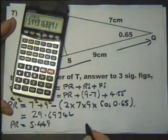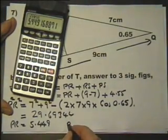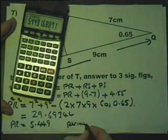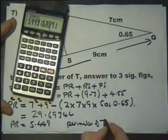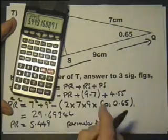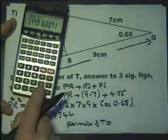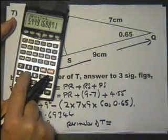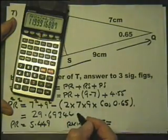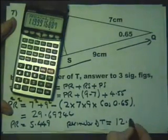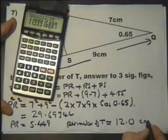So the perimeter of T equals that plus 2 plus 4.55, which equals 11.999, which is therefore 12.0 to three significant figures.